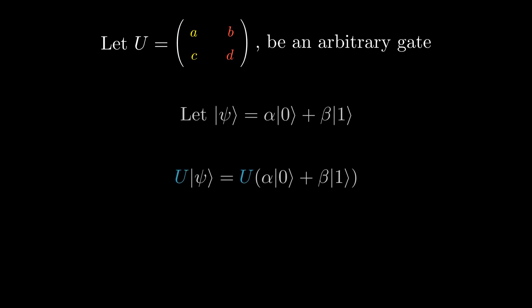Also, since quantum gates are linear, if we apply an arbitrary gate U, that gate acts on each of the superposition states individually. Let's look at an example of applying a gate in Dirac notation.